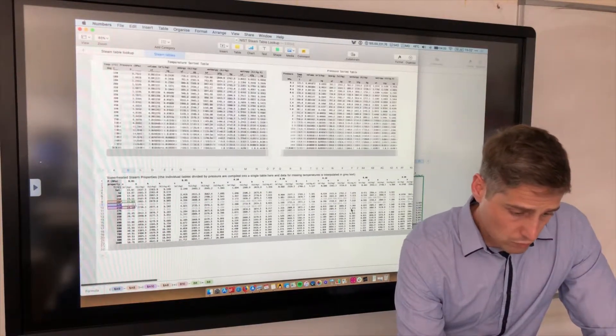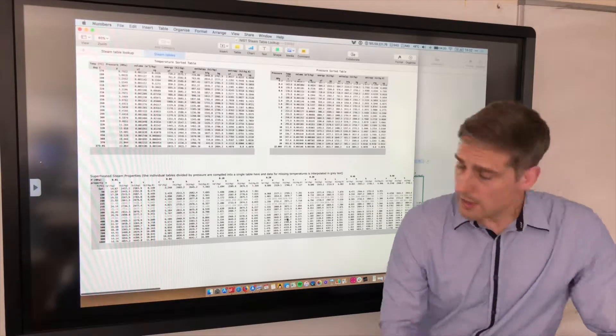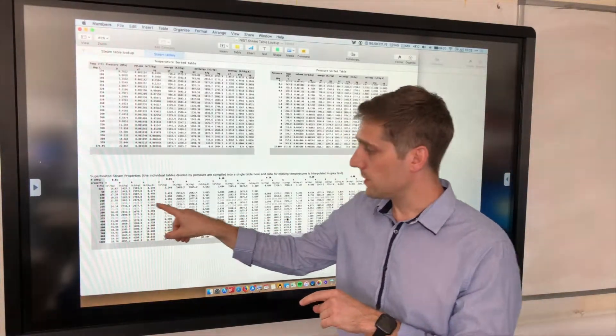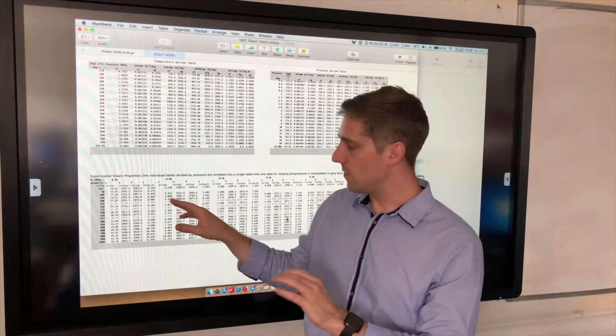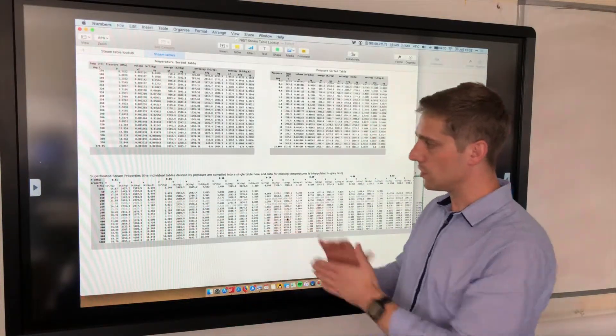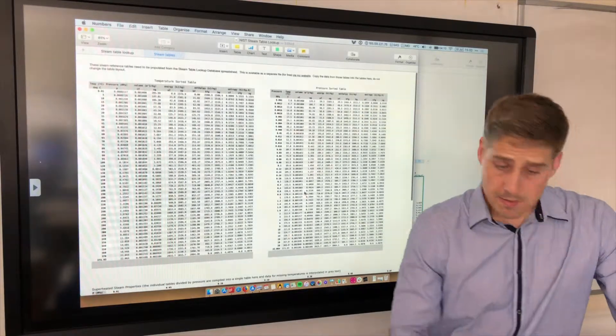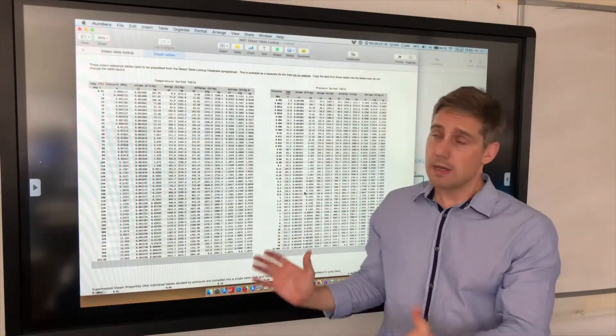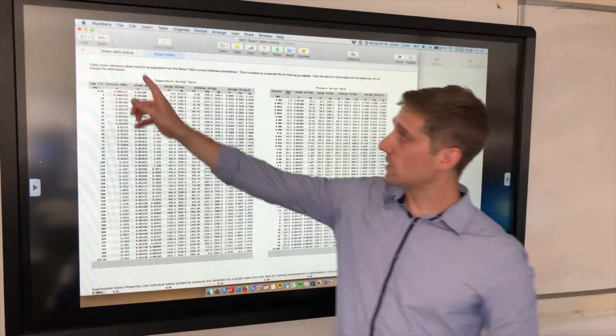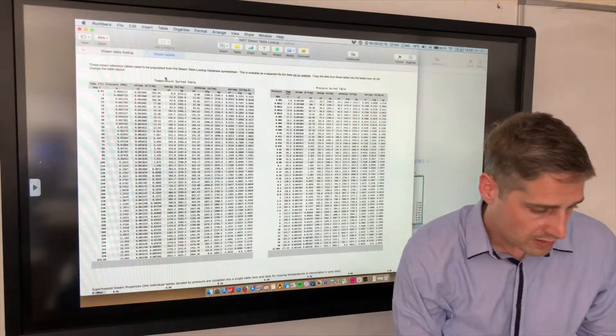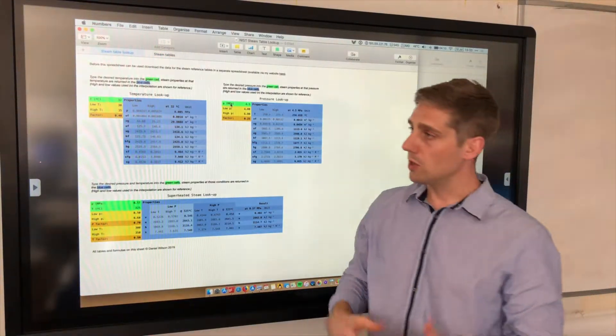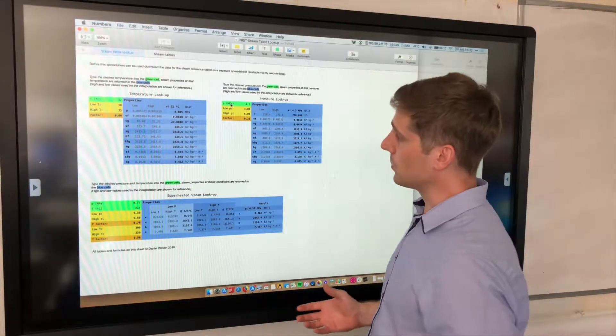That's our data all input now. You can see it's all there. I have highlighted in light grey the values that I've interpolated to create this table. That's all the data put into our database, if you like. Now, when we go back to the lookup tables, we'll actually be able to start looking up data for different temperatures and pressures.